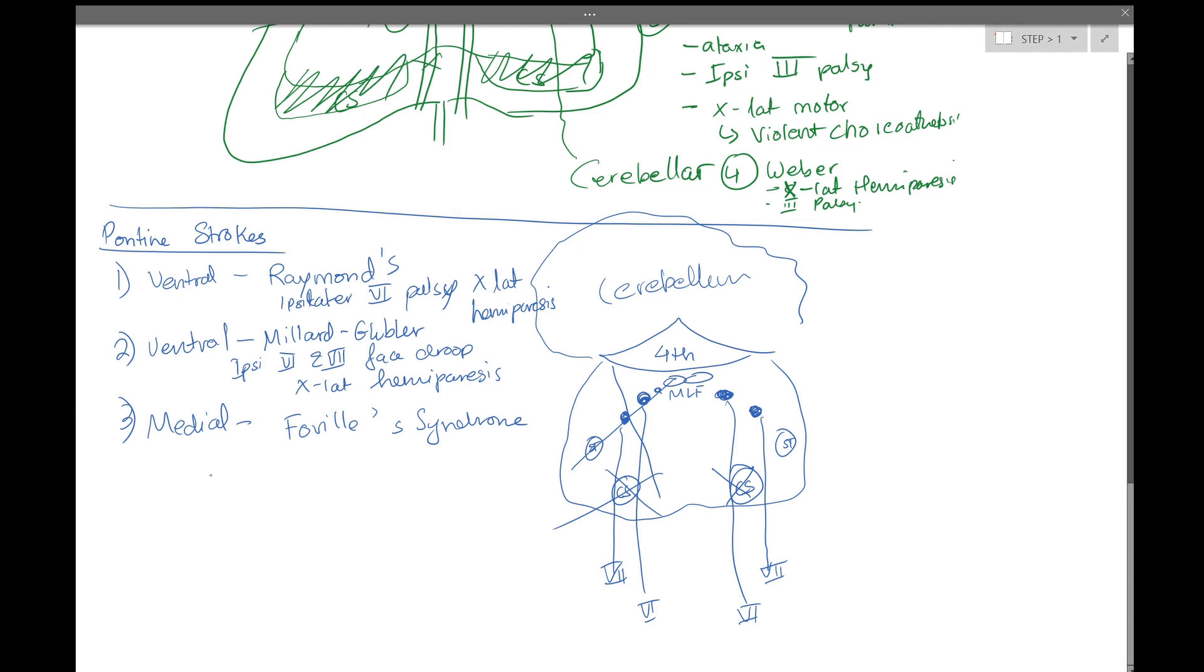This stroke can honestly knock out all of these things. So basically, you can have an MLF injury, which will create internuclear ophthalmoplegia. You could have 6 and 7 palsy. You can also have corticospinal knockout, which will give you contralateral hemiparesis.